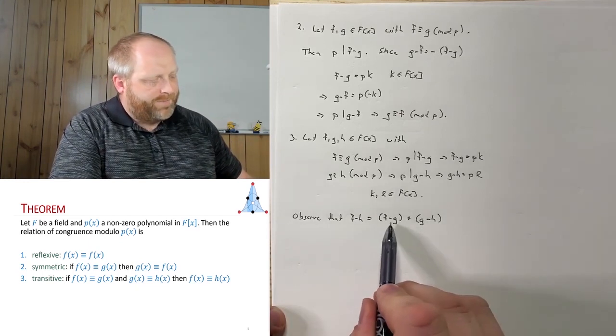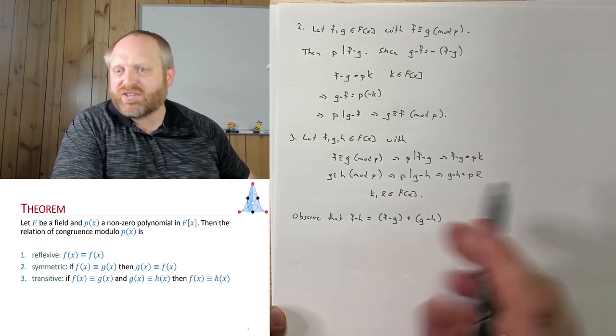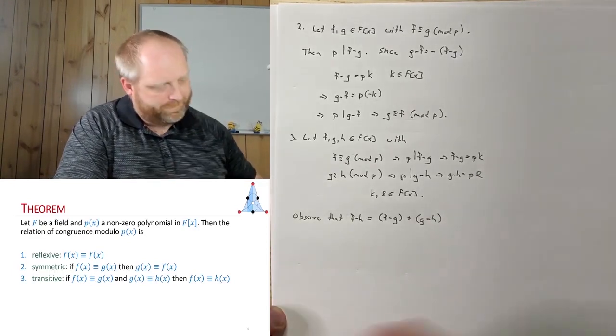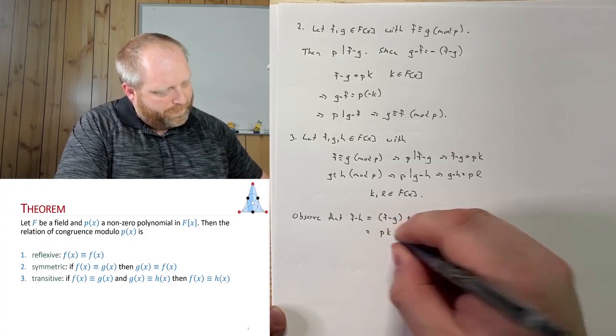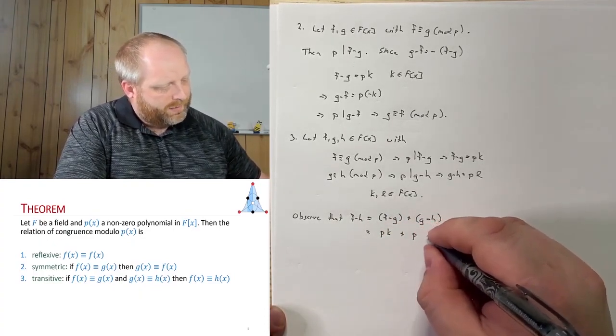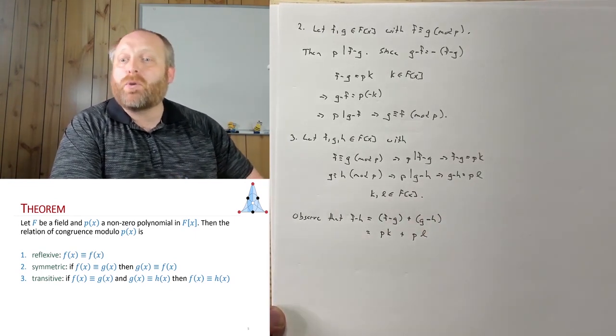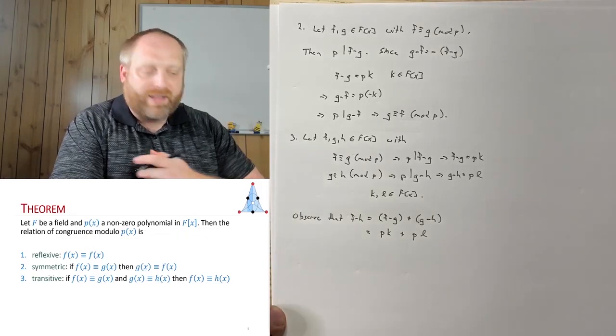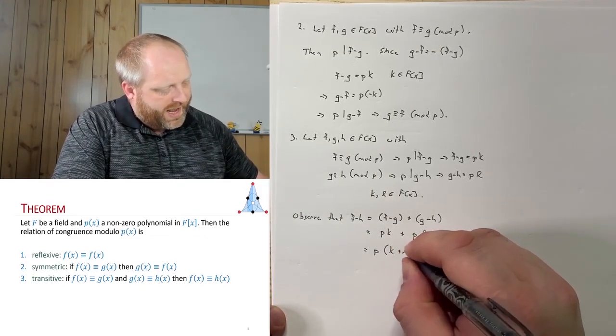But I have f minus g, this is equal to pk, and g minus h, this is equal to pl, so I'm just going to substitute those in. So pk plus g minus h, this is pl. So on my right-hand side, I have two terms, both involving a p. I can factor that p out. So this is p times k plus l.